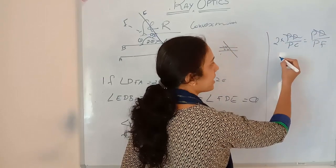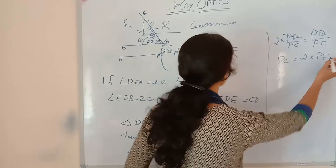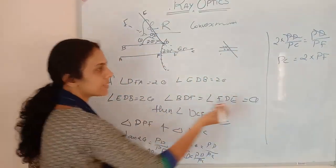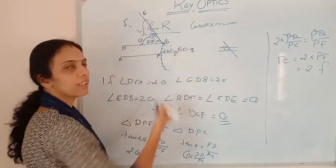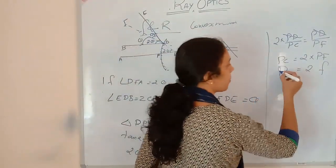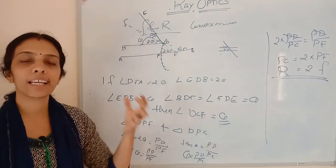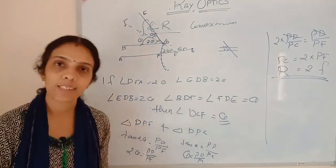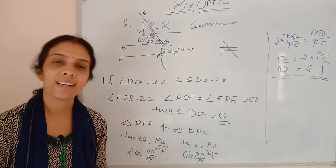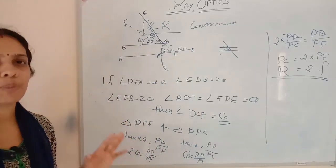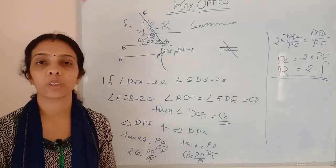PD cancels out, so we get PC equals 2 times PF. PF is the focal length f, and PC — from center of curvature to the pole — is the radius of curvature R. So R equals 2F. This is how we derive the equation using a convex mirror. For both convex and concave mirrors, we get the same result: the radius of curvature equals twice the focal length.